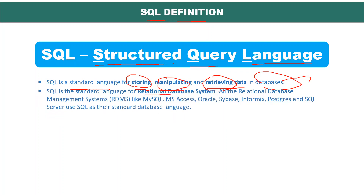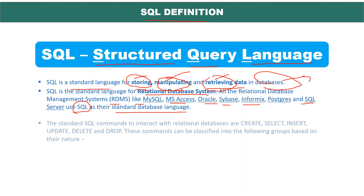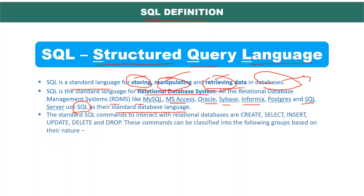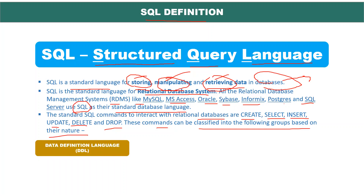Standard SQL commands to interact with relational databases include create, select, insert, update, delete, and drop. These commands can be classified into the following groups based on their nature. These groups cover the main functionalities you will use when working with databases.